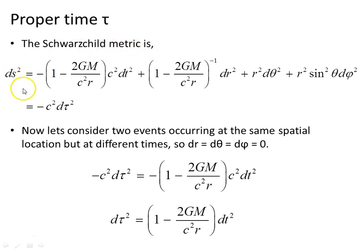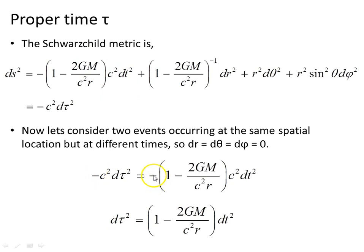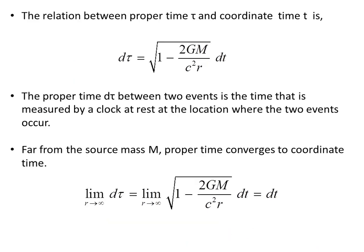The Schwarzschild metric also equals minus c squared dτ squared. Consider two events occurring at the same spatial location but at different times, so dr, dθ, dφ are all zero. The metric collapses to minus c squared dτ squared equals the first term of the spacetime interval. Multiplying through by minus one and dividing by c squared, we get dτ squared equals this expression. Taking the square root of both sides, dτ equals the square root of this factor times dt. The relation between proper time τ — the time measured by a clock at the location of the event — and coordinate time t is given by this factor.